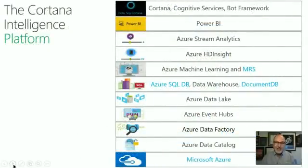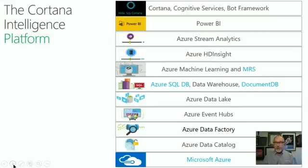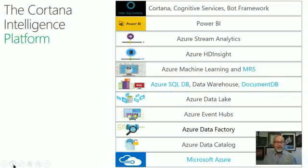All right, here we go — let's do our test. Microsoft Azure: host it. Data Catalog: dock it. Data Factory: move it, move it. Event Hubs: bring it. Data Lake: store it. Azure SQL DB, Data Warehouse, and Document DB: relate it. Azure Machine Learning: learn it — and that's where we're at today. Azure HD Insight: scale it. Azure Stream Analytics: stream it. And then of course, Power BI: see it. And Intelligent Programming: say it. Good job — do you remember them all? Probably by now you've memorized it well, and that will help you on your final exam.